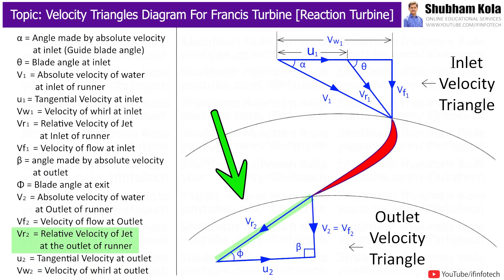Now next we indicate the relative velocity line at outlet. So this inclined line is relative velocity line Vr2. It makes the angle phi with the horizontal direction. So this horizontal line here is known as velocity of blade at outlet, i.e. u2. So here we completed velocity triangles diagram for Francis turbine.